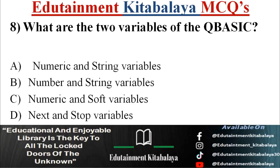Question number 8. What are the two variables of QBASIC? A. Numeric and string variables. B. Number and string variables. C. Numeric and soft variables. D. Next and stop variables. Correct answer is A. Numeric and string variables.